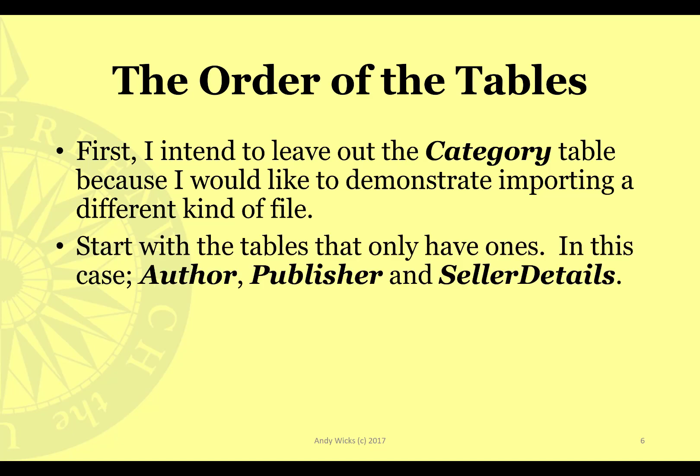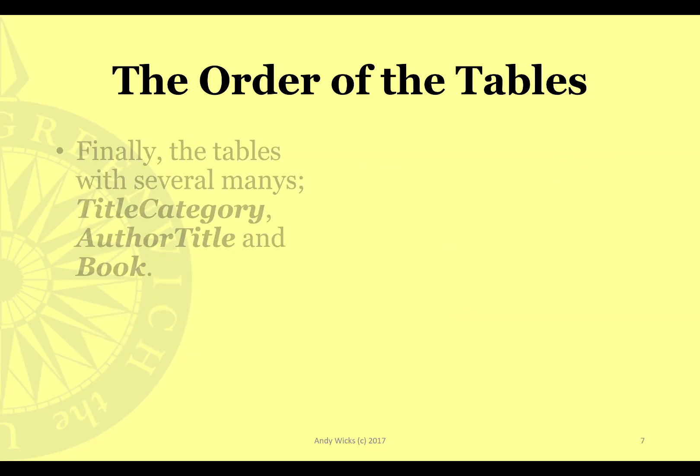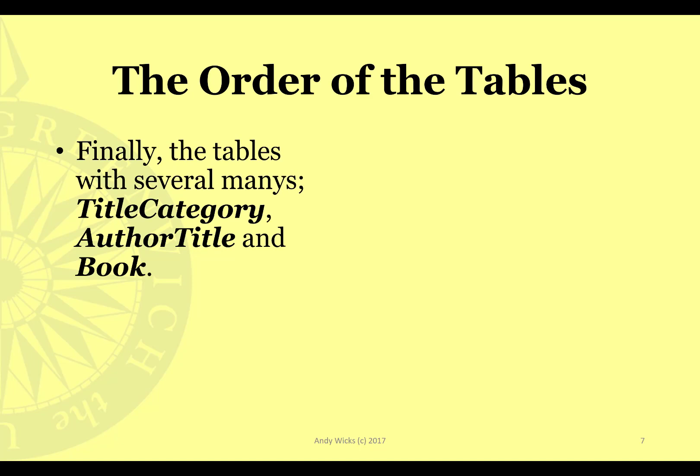We start with tables that only have one-ends — in other words, those that don't have a many connection. In this case, author, publisher, and seller details only have one-ends. Next, we look at those with a single many — in this case, that's purchase and title. Then we can move on to those tables which have several many's, so you work from the ones through to the most many's.